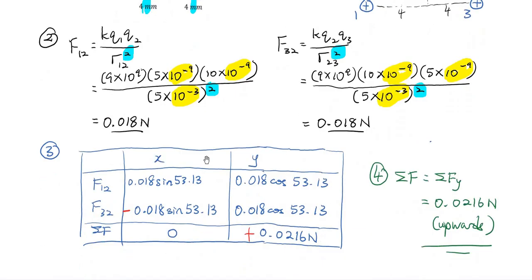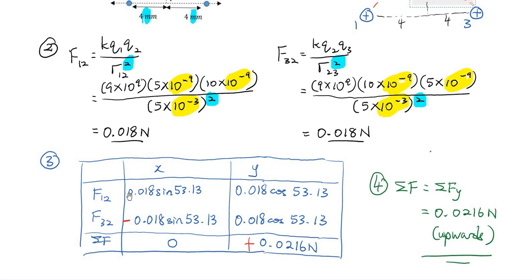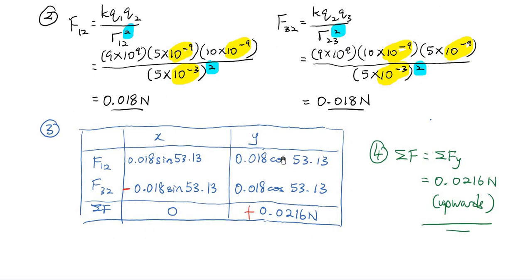The third step is to put the values into an X and Y component table. For F12, the X component is positive because it points to the right, and upward is also positive. The angle is measured from the Y component, so Y component uses cos theta and X component uses sin theta. So F12 has positive X and positive Y components.